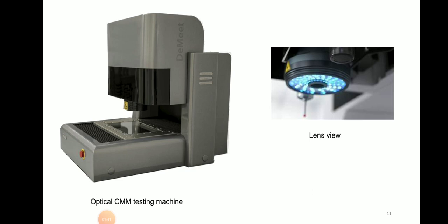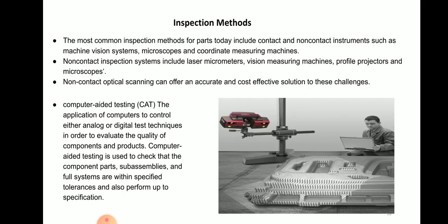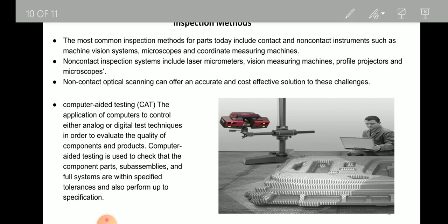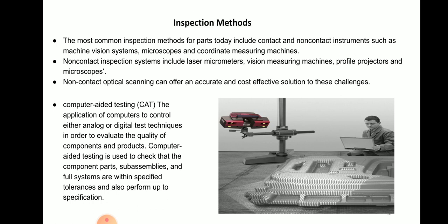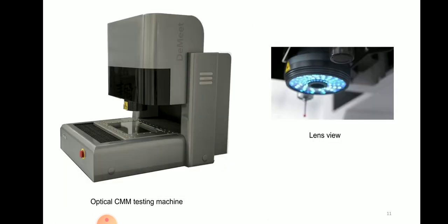Here you can see an optical CMM testing machine, and a lens view is also given. This is basically how we do inspection. You should also know the types of inspection, such as visual inspection and testing, where we are trying to inspect the product.